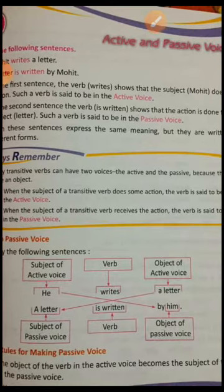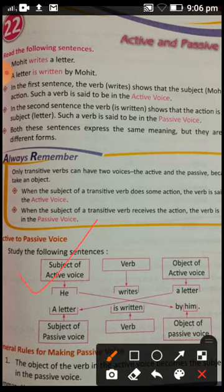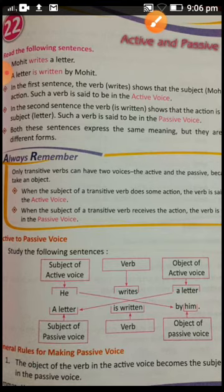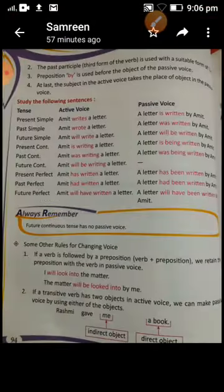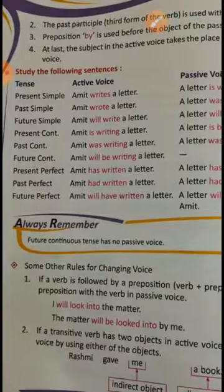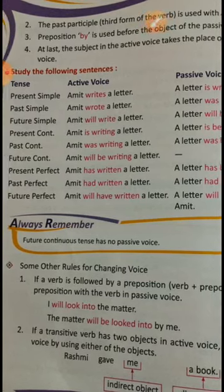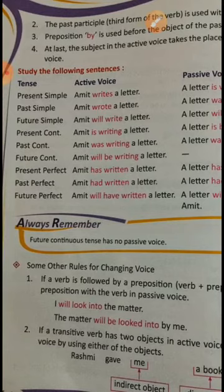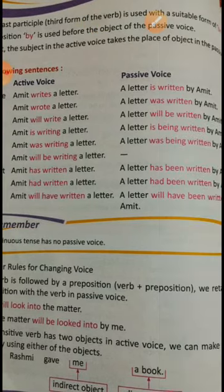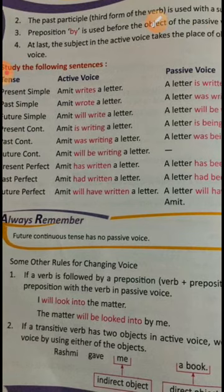There is a box in your book showing the subject of active voice, verb 'writes,' and object of active voice — I have explained that. Now let's look at the rules for making active and passive voice across different tenses. Study the following sentences — the same sentence 'Amit writes a letter' is shown in different tenses. For simple present, the passive is: 'A letter is written by Amit.'